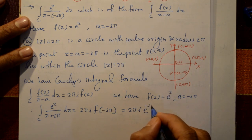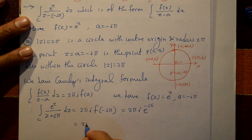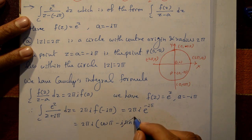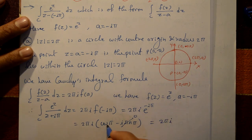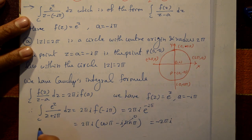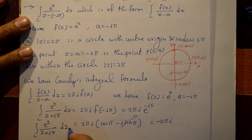Now e^(-iφ) = cos φ - i sin φ. Evaluating at φ = π: cos 180° = -1, so the result is 2πi · (-1) = -2πi. Therefore ∮ eᶻ/(z + iφ) dz = -2πi for the contour |z| = 2π.